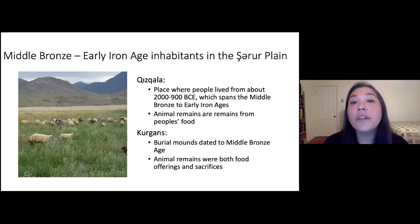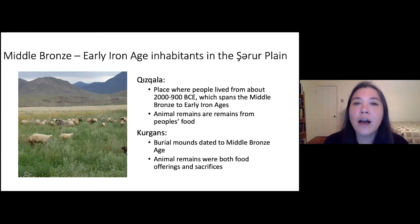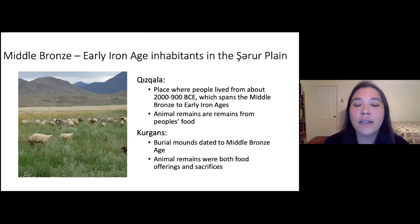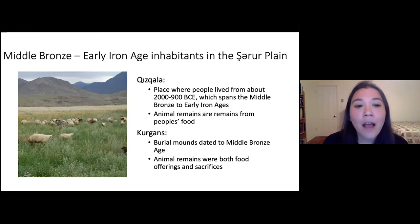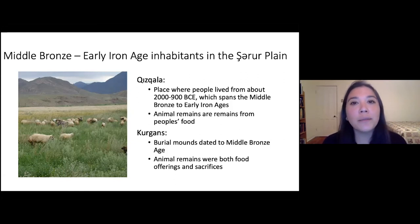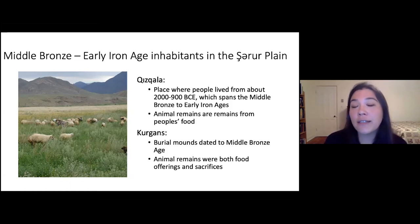One thing that's really cool about this site is that it actually lets us look at two different ways animal remains entered the archaeological record. We look at them in the context of the settlement where we're primarily looking at people's trash — the remains of what they ate on a day-to-day basis. And we can also look at them in the context of kurgans, which are monumental burials where animal remains were often included either as food offerings or occasionally as sacrifices.